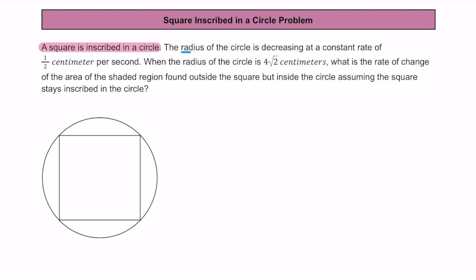The next thing we can see here is that the radius of the circle is going to be decreasing at a constant rate of half a centimeter per second. We are also told that the radius of the circle is going to be 4 times the square root of 2, or 4√2 centimeters. So r equals 4√2 at this given point.